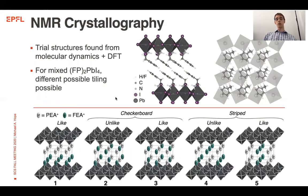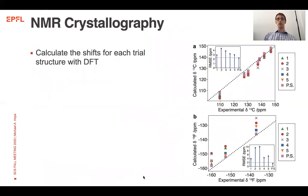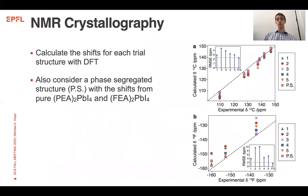To determine the structure we use NMR crystallography: we took trial structures from molecular dynamics which were then relaxed with density functional theory. For the mixed layered perovskites we considered five different tilings of the protonated and fluorinated molecules. We then calculated the shifts for each trial structure with density functional theory, as well as for a phase-segregated structure where the shifts were taken from the pure layered perovskite structures.